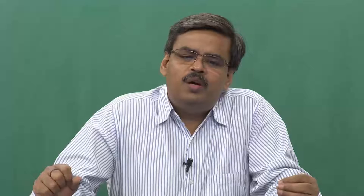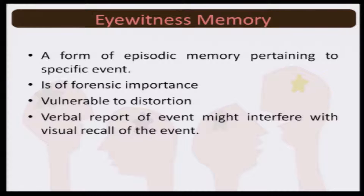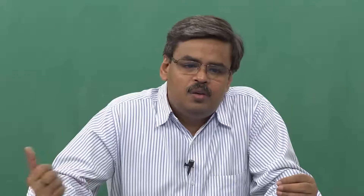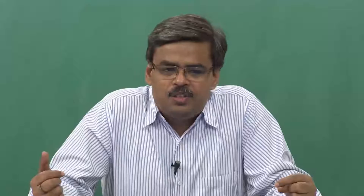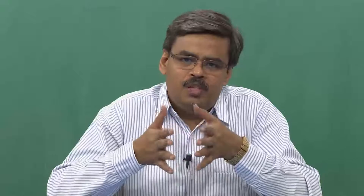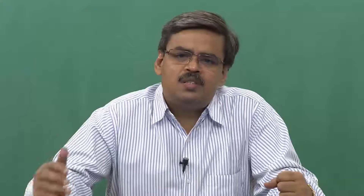One form of episodic memory is called eyewitness memory. It is called eyewitness because it has forensic importance. You must have heard this word — there is somebody who acts as a witness in a court of law. You provide evidence and endorse the happening of something; you are testifying and becoming a witness to it. When recollection of information — which is basically an episode at a specific time — serves the forensic purpose, it is called eyewitness memory.